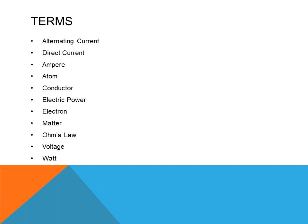Some of the terms that a student needs to go over and review are: alternating current, direct current, ampere, atom, conductor, electrical power, electron, matter, Ohm's Law, voltage, and watts.